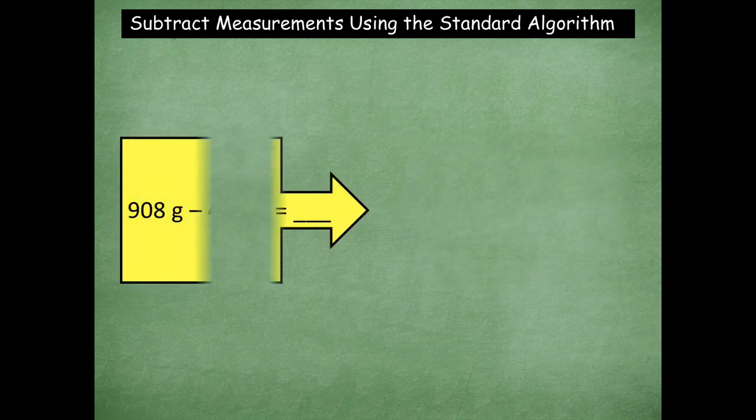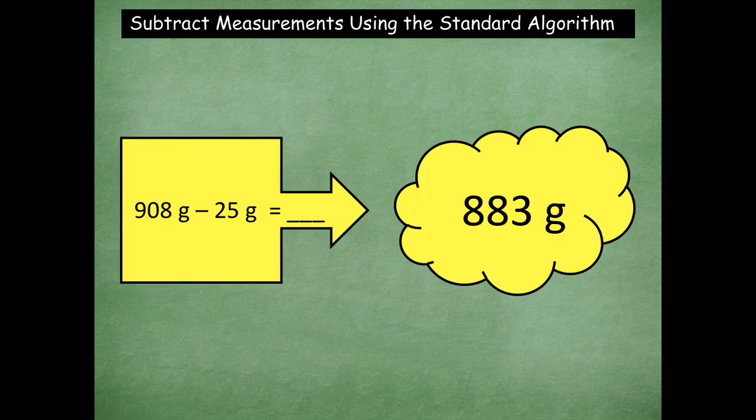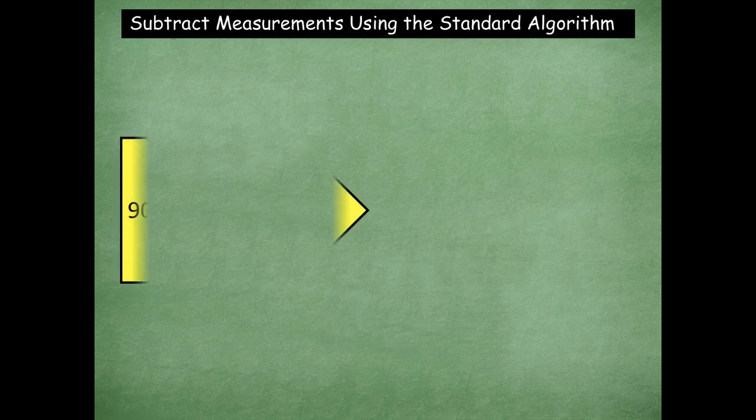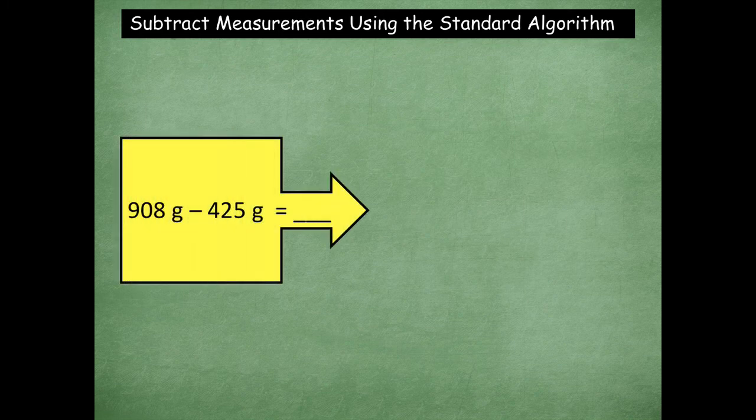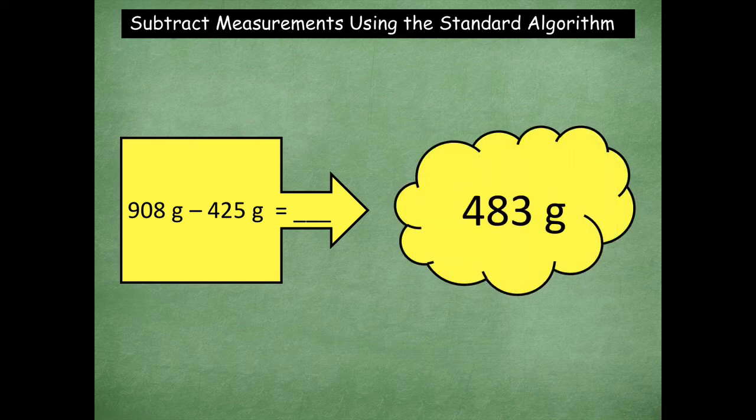Here's our last problem that we're going to do. 908 grams minus 425 grams. This is very similar to the one that we just did. Look, 908 minus 25. So now we're doing 908 minus 425. Okay, so pause the video, solve it, click play when you're ready for the answer. Okay, here we go. 483 grams is the correct answer.